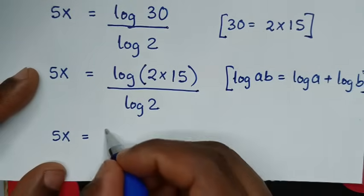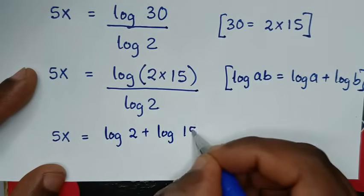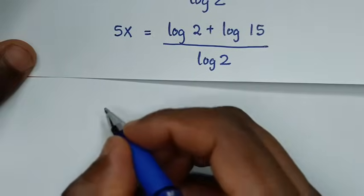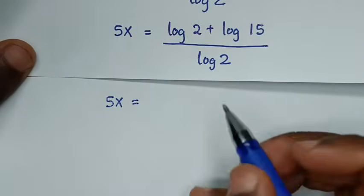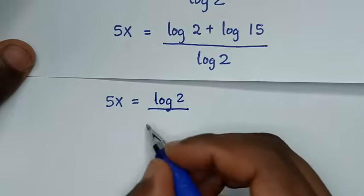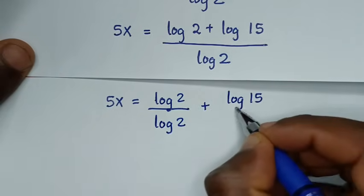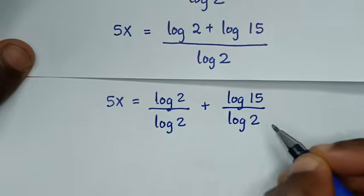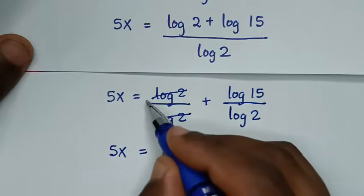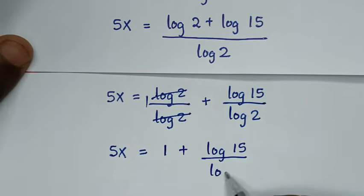So into here it will be log of 2 plus log of 15, over log of 2. Then we divide log of 2 into each term, so it will be log of 2 over log of 2, plus log of 15 over log of 2. So it will be 5x is equal to 1 plus log of 15 over log of 2.